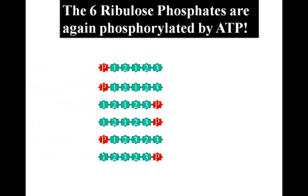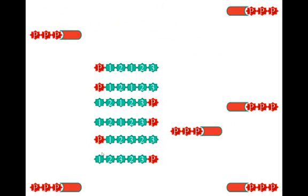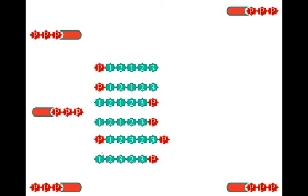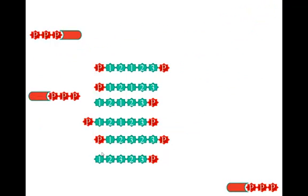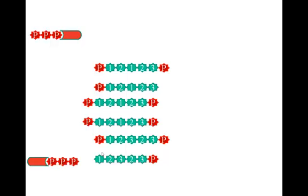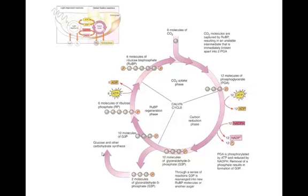The six ribulose phosphates will then be phosphorylated by ATP to regenerate ribulose bisphosphate, RUBP. So the ten molecules of G3P are then going to be rearranged by ribulose phosphate, ATP comes in and phosphorylates each one of those molecules, and now we have regenerated RUBP.